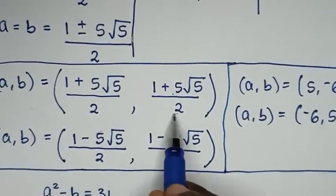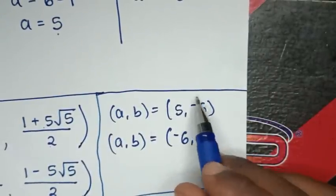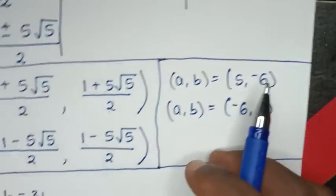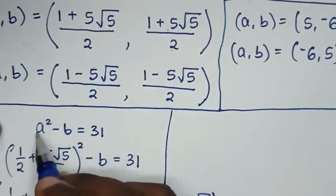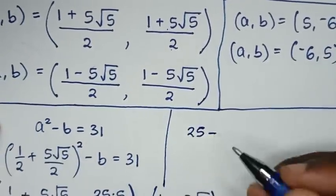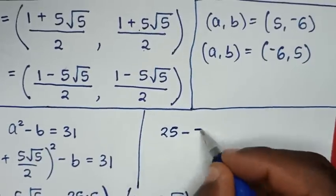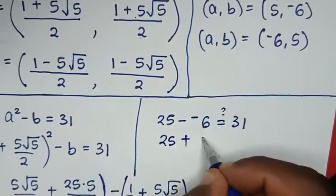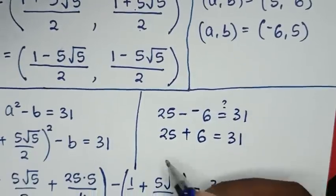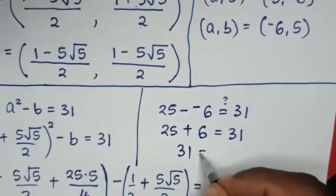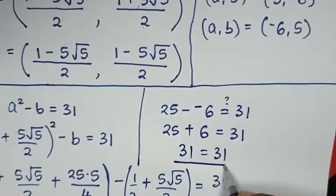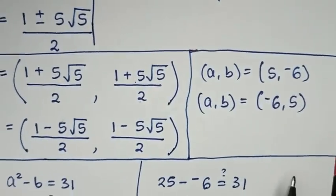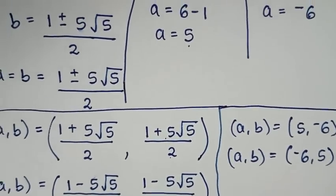Now checking the integer solution a equals 5, b equals negative 6 in equation 1: 5 squared minus (−6) equals 25 plus 6 equals 31, which equals 31. Left side and right side are equal, so this solution is confirmed. Thank you — don't forget to subscribe to my channel, and see you in the next video.